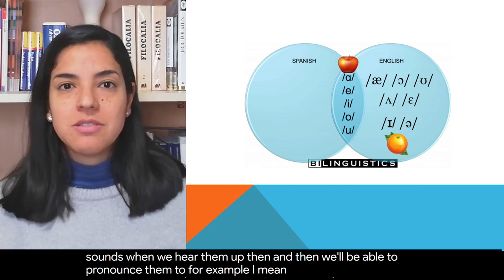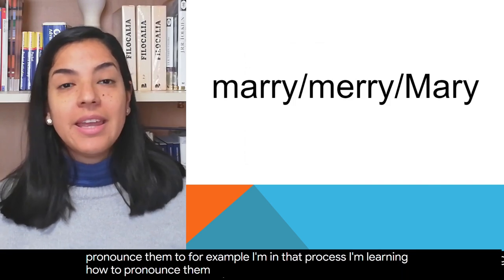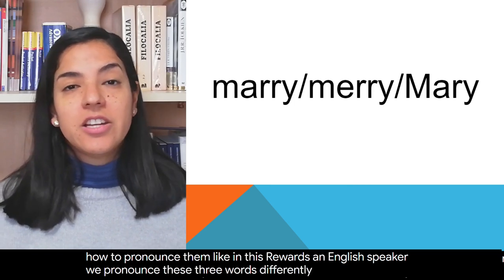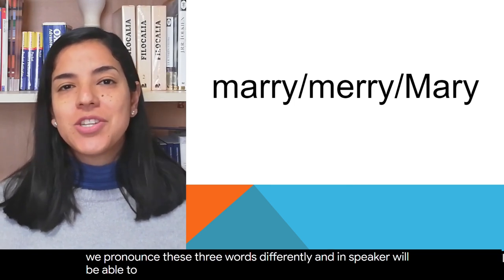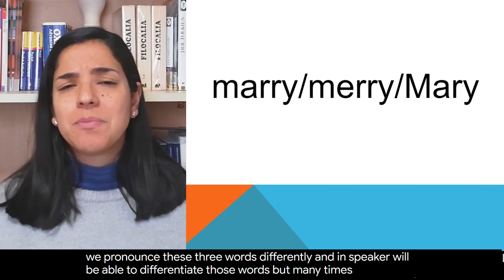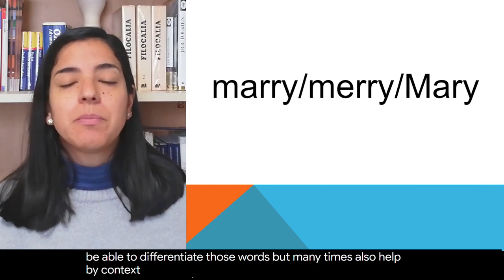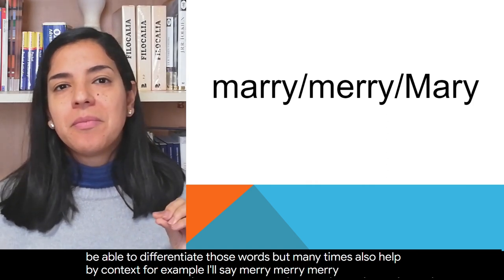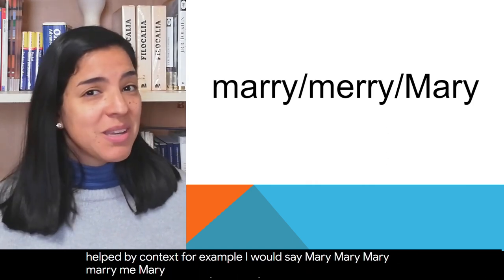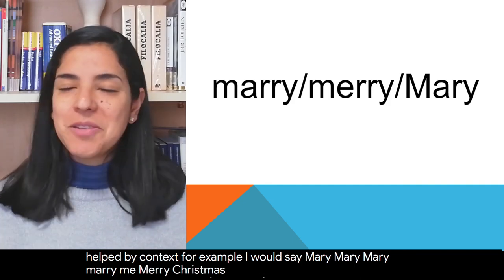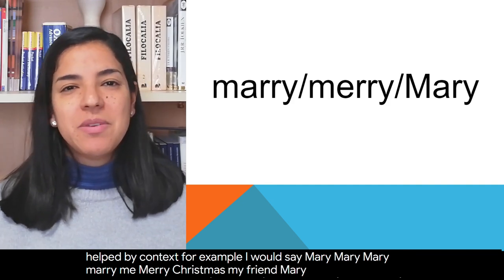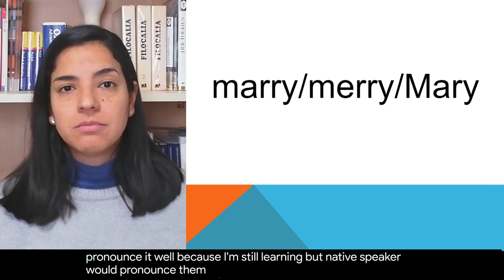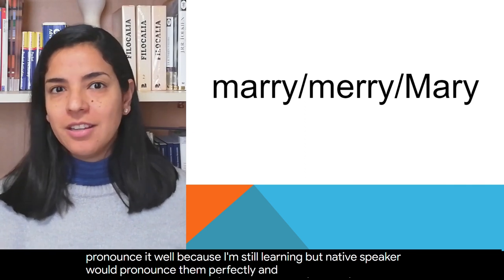For example, I'm in that process — I'm learning how to pronounce them. Like in these three words: an English speaker will pronounce them differently and be able to differentiate those words, but many times also helped by context. For example, I'll say 'marry' — marry me — 'merry' — Merry Christmas — 'Mary' — my friend Mary. And maybe I don't pronounce them well because I'm still learning, but an English speaker would pronounce them perfectly and differently.